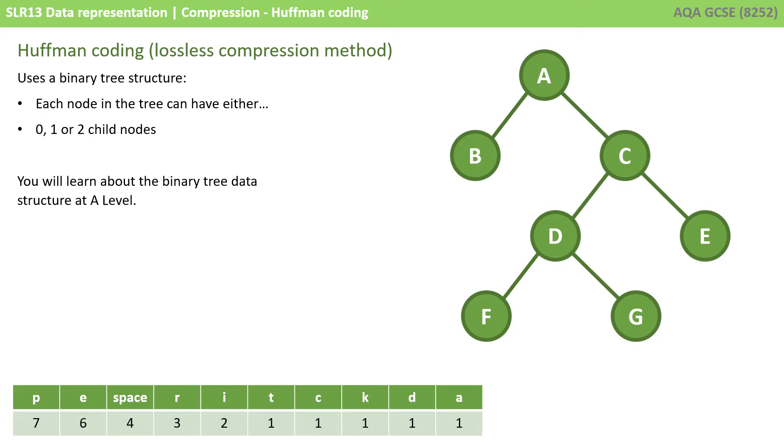Huffman coding makes use of what are known as binary trees. This is a data structure that you'll learn about at A-level. All you need to know is that with binary trees, we have nodes, and each of those nodes can have 0, 1 or 2 child nodes, but no more than 2, hence the term binary tree.